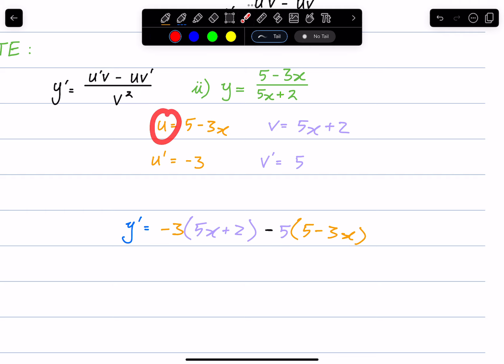So in this case, u and v', the order is switched, but it's still the product of these. This must all be over the denominator, so v squared.